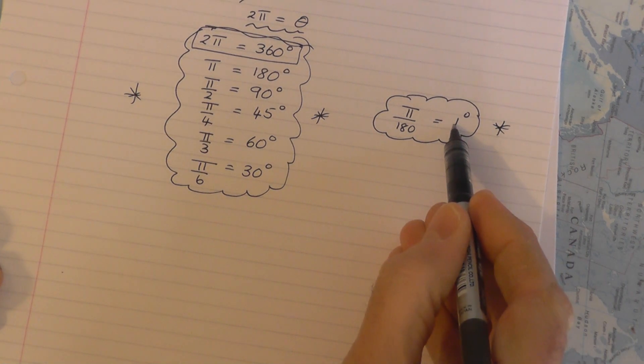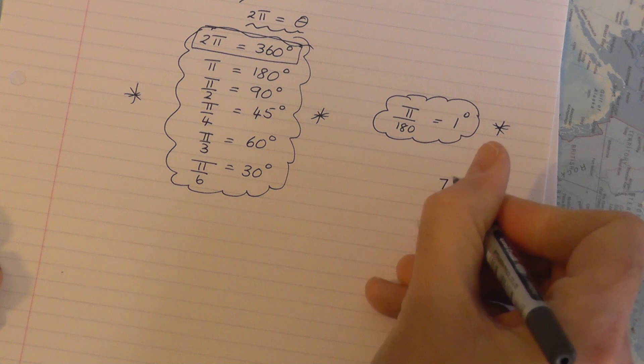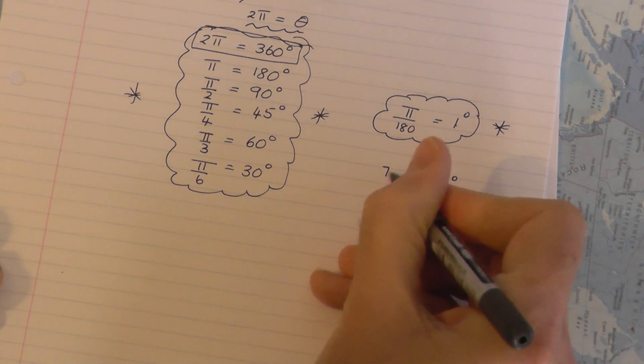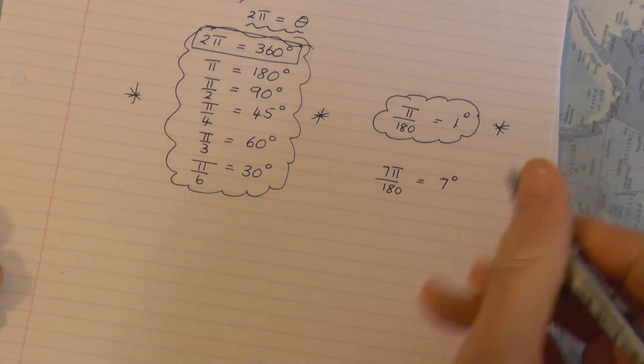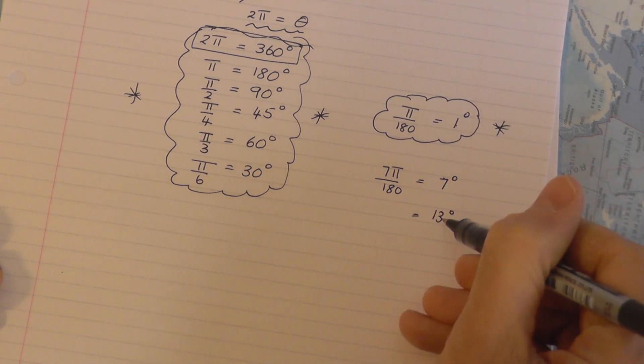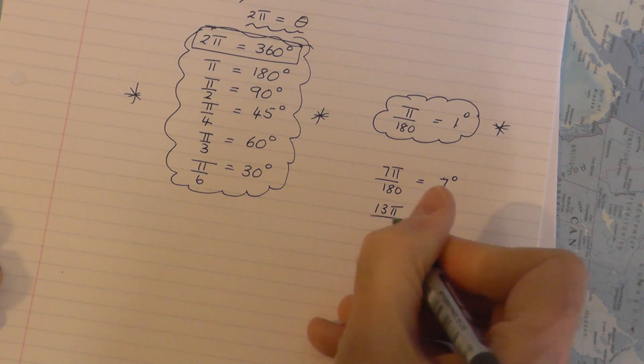Now you can use this one to adapt to get various other awkward angles. So for example if you had 7 degrees, that's just 7 times as big, so times that by 7 you'd get 7π/180 rads. If you had 13 degrees, it's 13 times as big, so 13 times that is 13π/180.